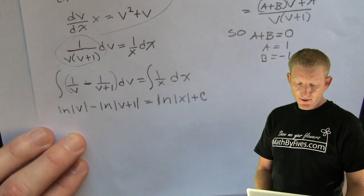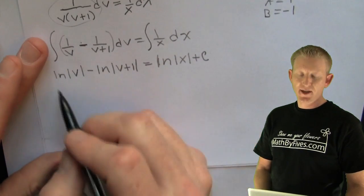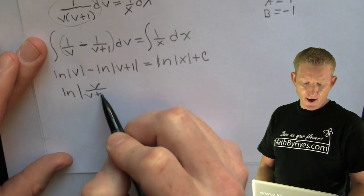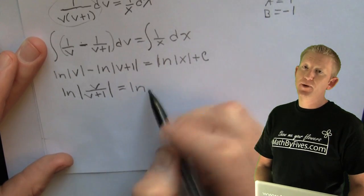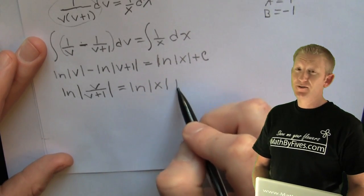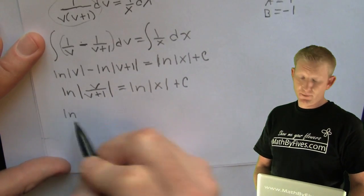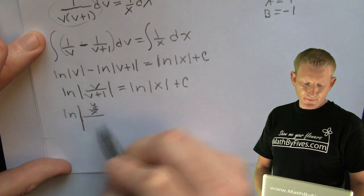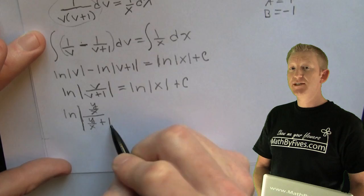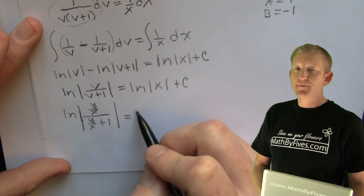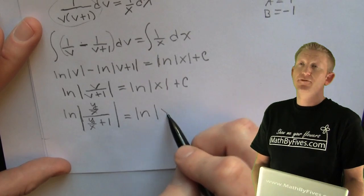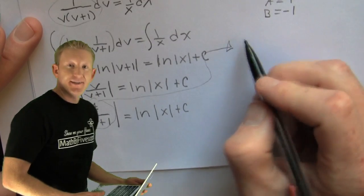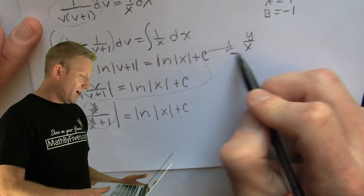We integrated both sides. Now he's combining those logarithms — the difference of logs is the log of the quotient. That's good because he wanted to combine those logs before back-substituting, otherwise you'd get nasty exponentials. So he's putting the back-substitution in — he replaced all of his v's with y over x, which is what he originally had. He had to make that substitution to make the equation separable.